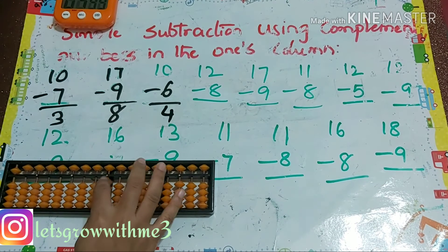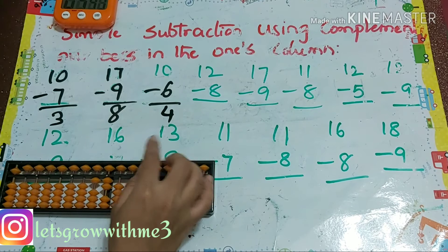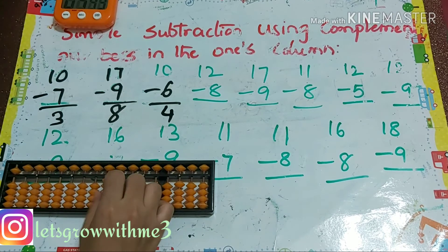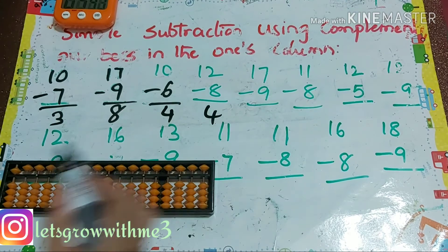Next problem: 12 minus 8. How to do minus 8? Minus 10 plus 2. Our answer is 4.